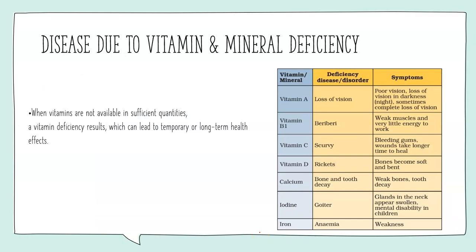Disease states can also result from vitamin and mineral deficiency, not just excess. A deficiency in vitamin A causes loss of vision, since vitamin A is retinol affecting our eyes. B-group vitamins such as B1 deficiency cause beriberi, a muscular disorder resulting in muscle atrophy. Vitamin C deficiency causes scurvy, with wounds taking longer to heal. Vitamin D deficiency leads to rickets, where bones have a characteristic bent shape. Calcium deficiency causes bone and tooth decay and osteoporosis. Iodine is required for good thyroid function, and iron deficiency leads to anemia.